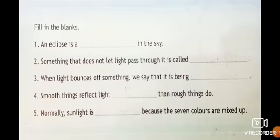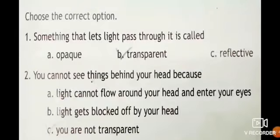Normally sunlight is colorless because seven colors are mixed up. Sunlight is colorless because the seven colors are mixed up.